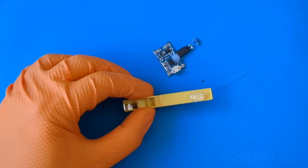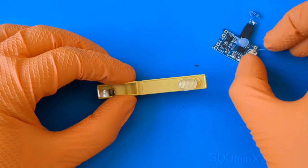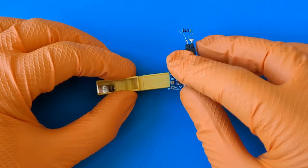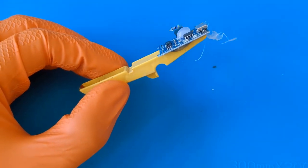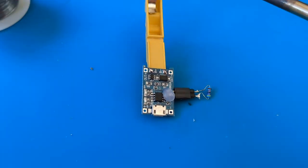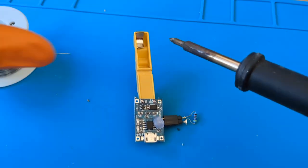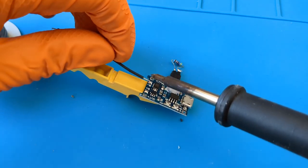Now we can start assembling everything. Let's glue the module to the clothespin. Next, we solder two wires to the positive and negative poles.